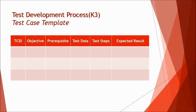The expected result is the expectation from the application when the test steps are executed — what do you expect to happen — and this is captured in the test case sheet. This template is used when writing test cases in the test design phase. More columns, such as actual result, test case status, and remarks, are added when moving to execution.